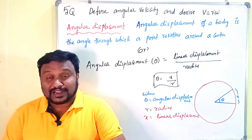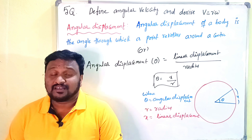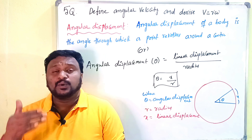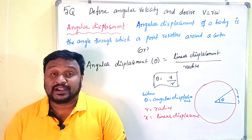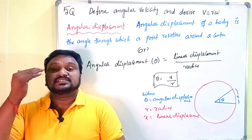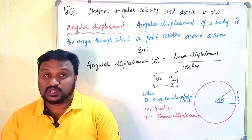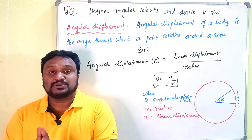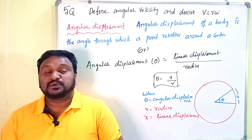Hi dear friends, welcome back to our channel Vinay Kumar Basics of Physics. In this video we are going to discuss one of the most important very short answer questions in the chapter of System of Particles and Rotatory Motion — that is the relation between linear velocity and angular velocity, and the derivation: v equals r omega.